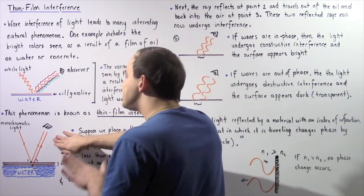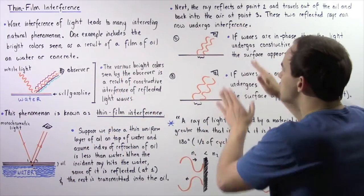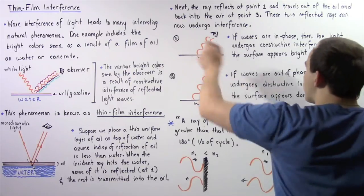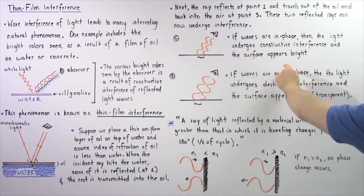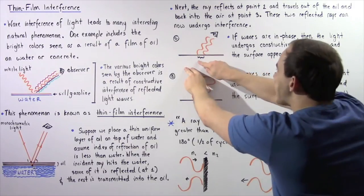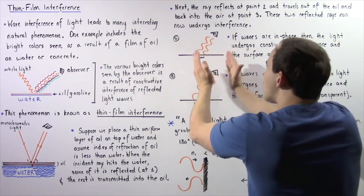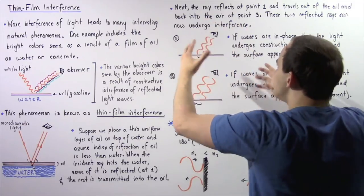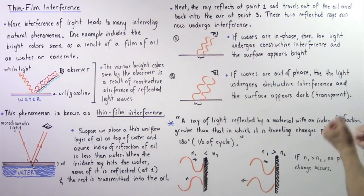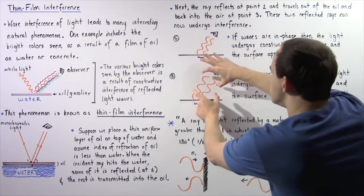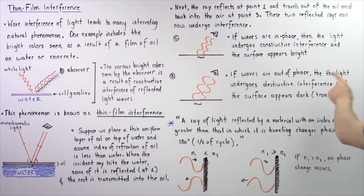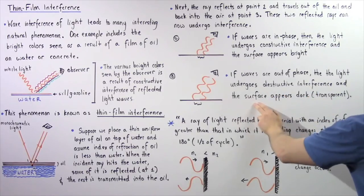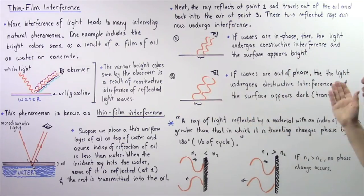We treated these light rays as straight pathways, but now let's suppose they're sinusoidal waves. In diagram A, if the waves are in phase with respect to one another, the light undergoes constructive interference and this section of the surface will appear very bright because the amplitude of the wave increases. On the other hand, in diagram B, if the waves are out of phase — meaning the crest of one wave is right next to the trough of the other — then the light undergoes destructive interference and the surface at that section appears dark or transparent.